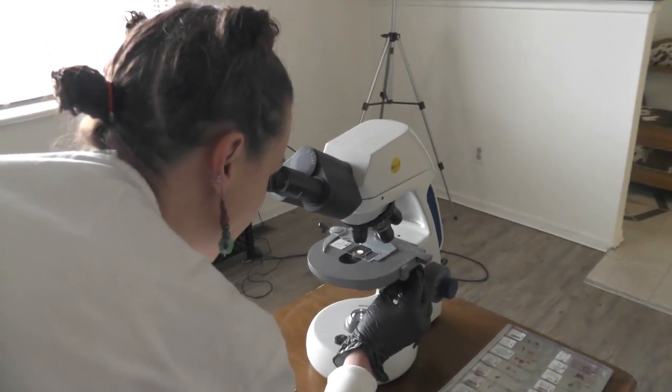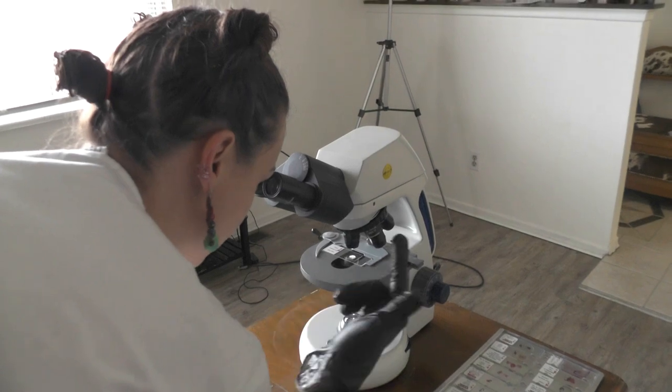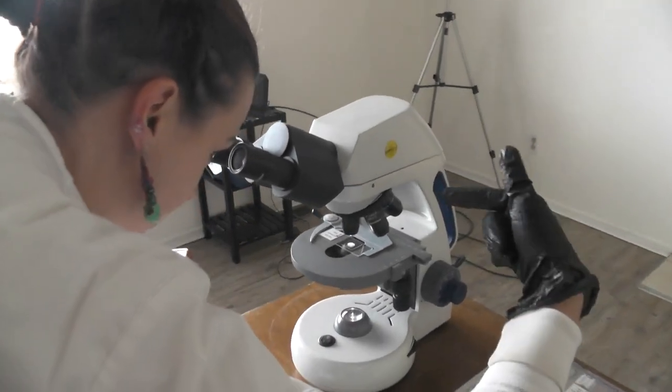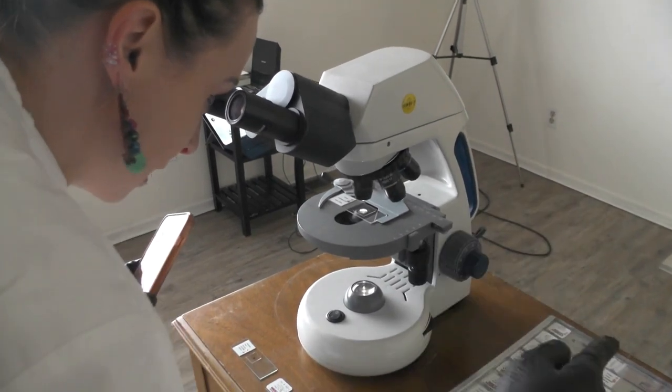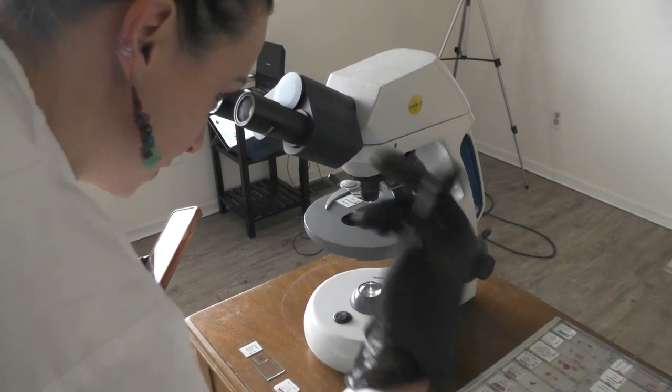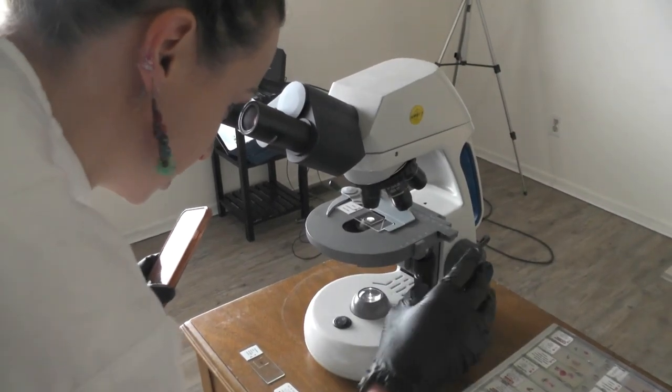I'm actually going to zoom out from this far away because what's really cool in this slide is we can see the epithelium on top with its lamina propria and muscularis mucosae. Then we can see the submucosa. Then we can actually see the inner circular layer of smooth muscle and the outer longitudinal layer.